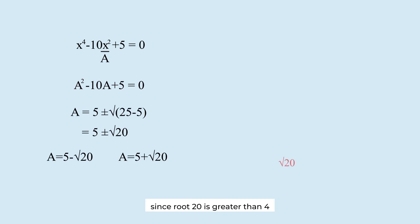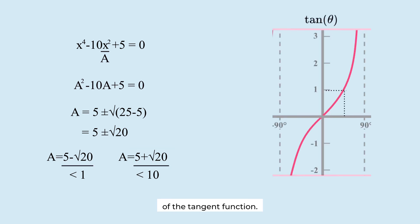Since root 20 is greater than 4 and less than 5, this value is less than 1 while the other value is closer to 10. Which one is the value of a? The square of x. Look at the graph of the tangent function. The value of tangent 36 degrees is smaller than the value of tangent 45 degrees.